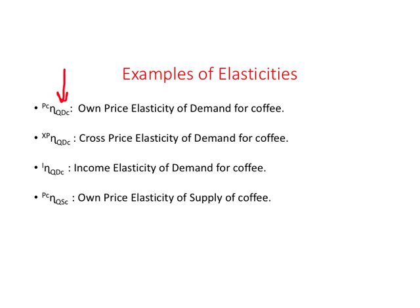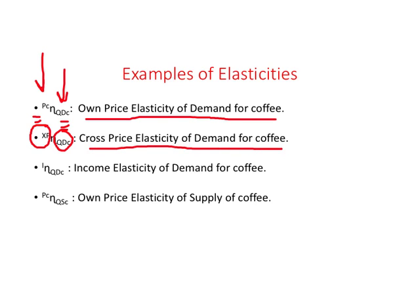We have the dependent variable and the independent variable, and we are looking at the impact of price per cup of coffee on demand for coffee — we call this own price elasticity of demand. In the second one, XP is the independent variable, representing the price of other goods like price of tea or price of sugar, and its impact on demand for coffee is called cross-price elasticity of demand for coffee. Another independent variable which can impact demand for coffee is income, and we call this income elasticity of demand for coffee.